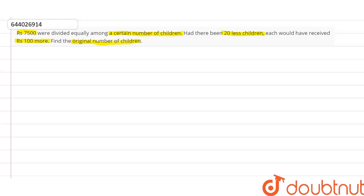So now, let us assume that the original number of children was x. This implies that each child received 7500 divided by x rupees.